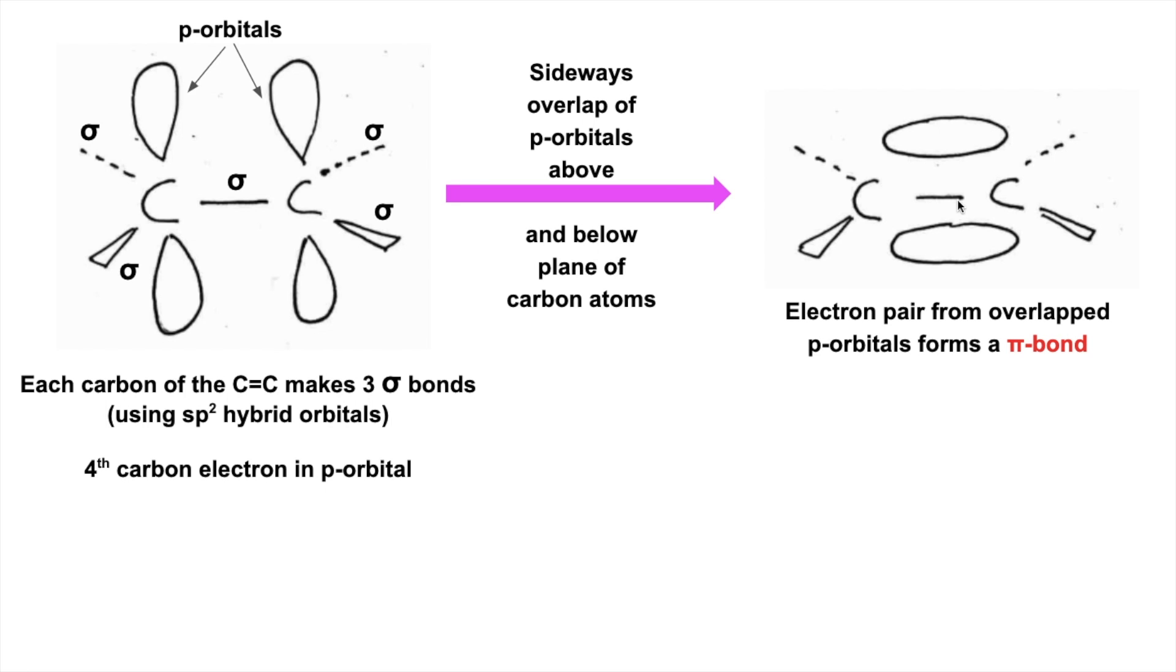That's what we call the pi bond. The pair of electrons that's able to pair up from the overlap of the two p orbitals is the pi bond.